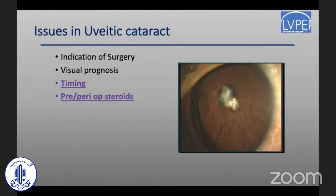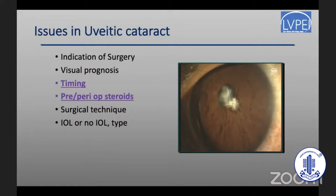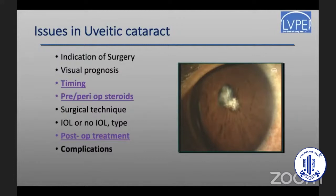The timing of surgery is always extremely crucial and should be done in a window when the inflammation is inactive, using perioperative steroids. The surgical technique requires a few modifications from standard cataract surgical techniques, including the choice of whether we can place an intraocular lens and what type. For example, in pediatric patients less than 10 to 12 years of age, placing an intraocular lens is contraindicated.